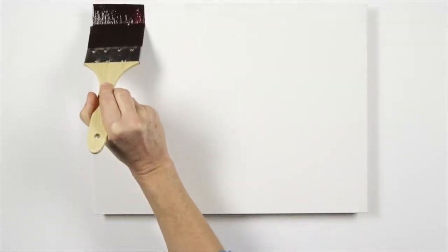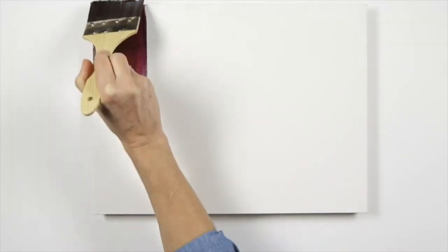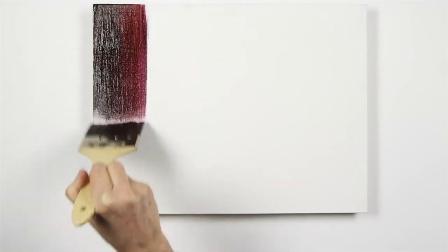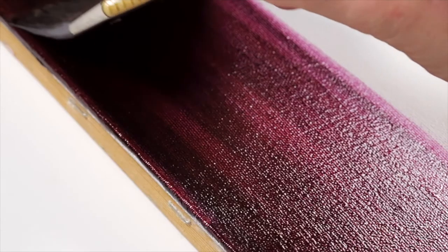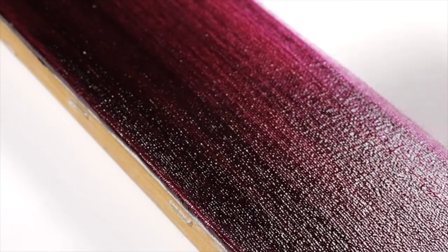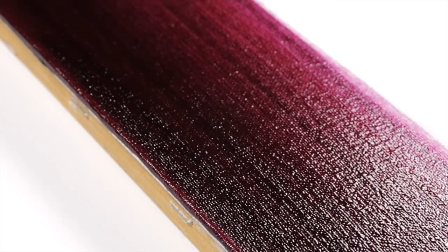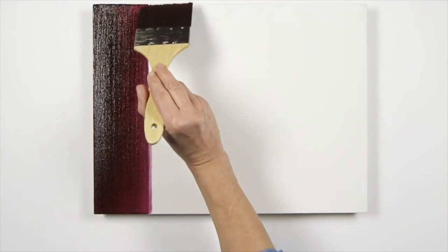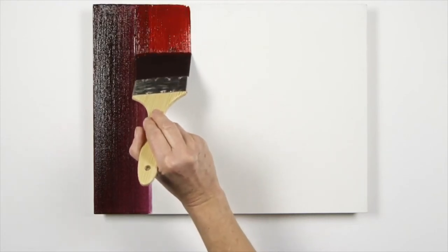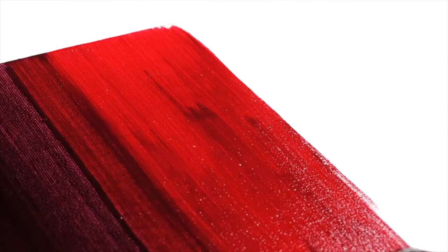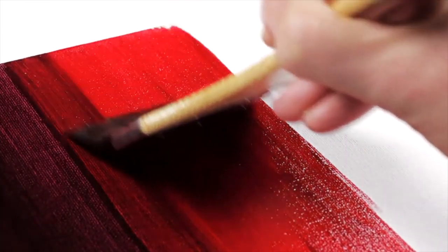Now begin the blend. You'll need to work confidently, blending in order from chromatically darker colours to lighter tones. First the dioxazine purple and the permanent alizarin crimson mix. Blending into the alizarin crimson and Winsor Red Deep. Remember it's important to keep your colours clean and move your brush in one direction like this.